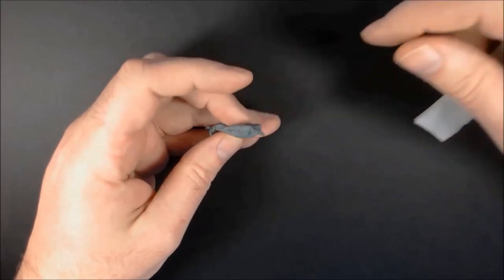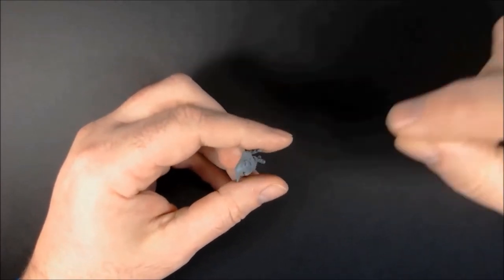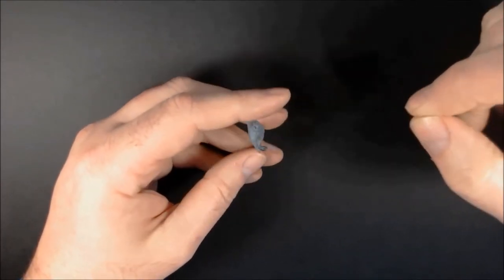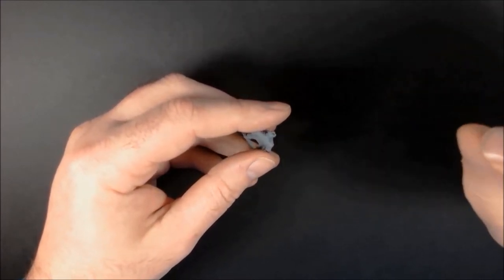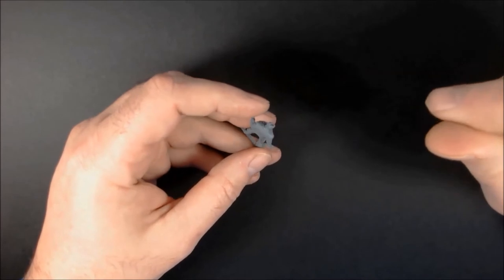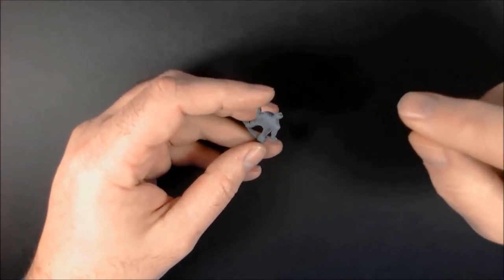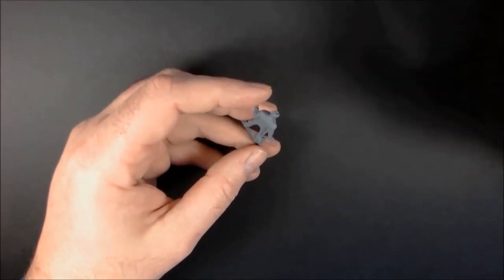And it gives a lovely finish. If you do some work with a needle file to start with, if it's quite coarse, you can break it down to quite a thin mold line. If you can still see the mold line, use the sandpaper and it'll get rid of it and give it a lovely smooth finish.